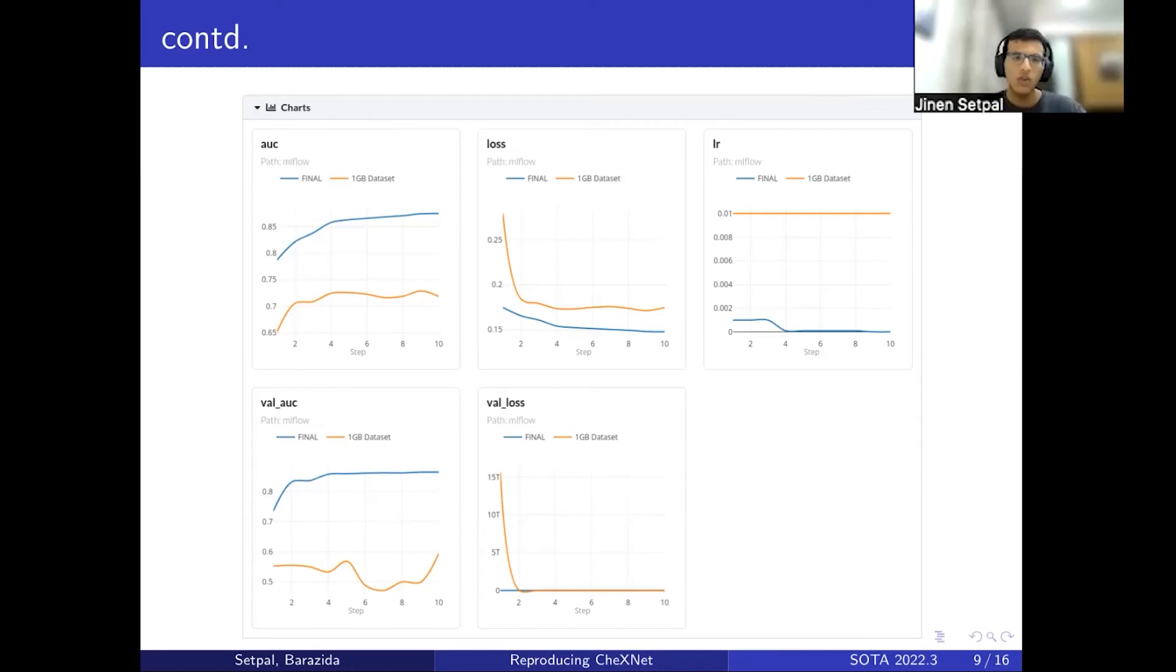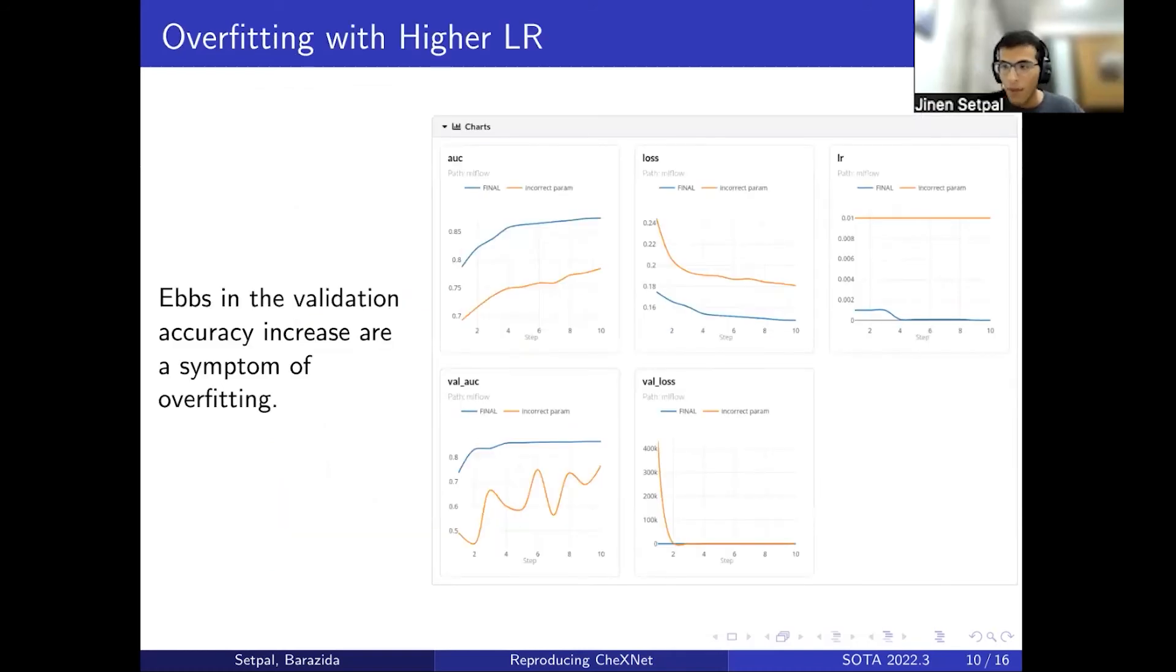Another issue that ML Flow was very helpful in finding was an overfitting problem. We trained the full dataset with learning rate of 0.01, and the validation AUC was fluctuating a lot. We figured this could be a symptom of overfitting, which led us to read the paper one more time, where we found we had noted the learning rate wrong—it was actually 0.001 instead of 0.01. ML Flow showed us that since the metrics were fluctuating, something was wrong, and we found the solution in the paper.